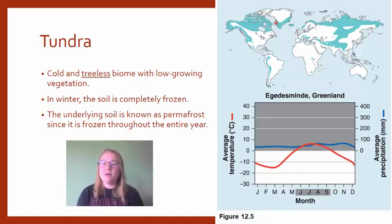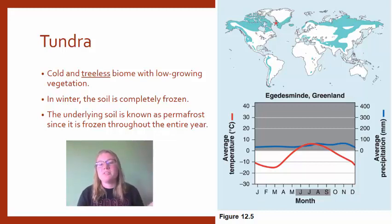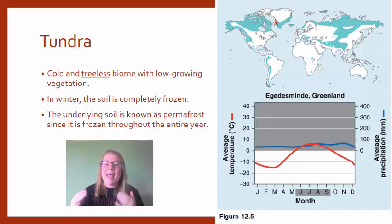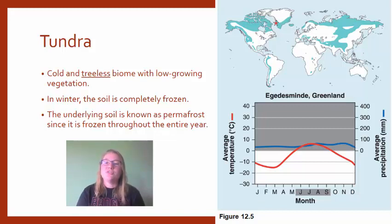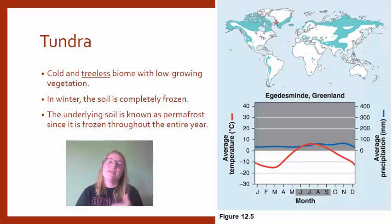We're going to start with the coldest biome and work our way to the warmest. The tundra is a cold and treeless biome with low-growing vegetation — think of the landscape you'd see behind a polar bear, which is the tundra's sole habitat. As the earth warms, the average temperature characteristic of the tundra is rising, so the space that makes up the tundra is shrinking. The tundra also has permafrost — soil that is frozen throughout the entire year — and as climate change warms temperatures, that ground is no longer staying frozen, which leads to some interesting consequences we'll discuss later.